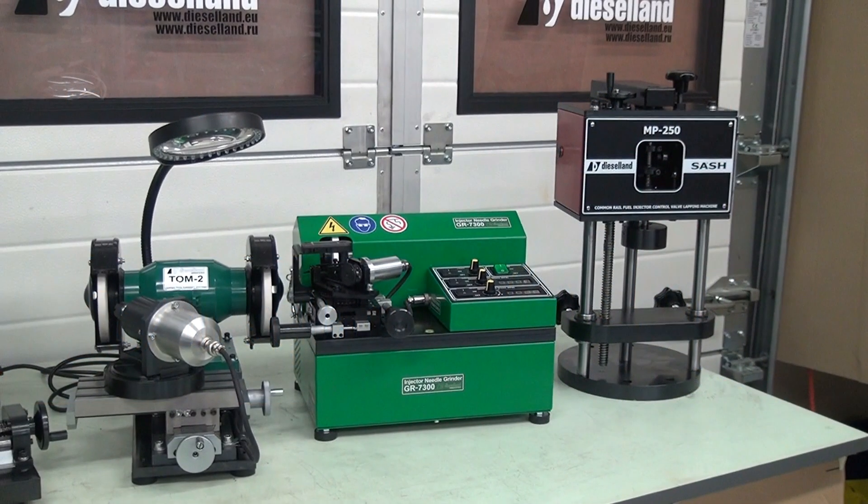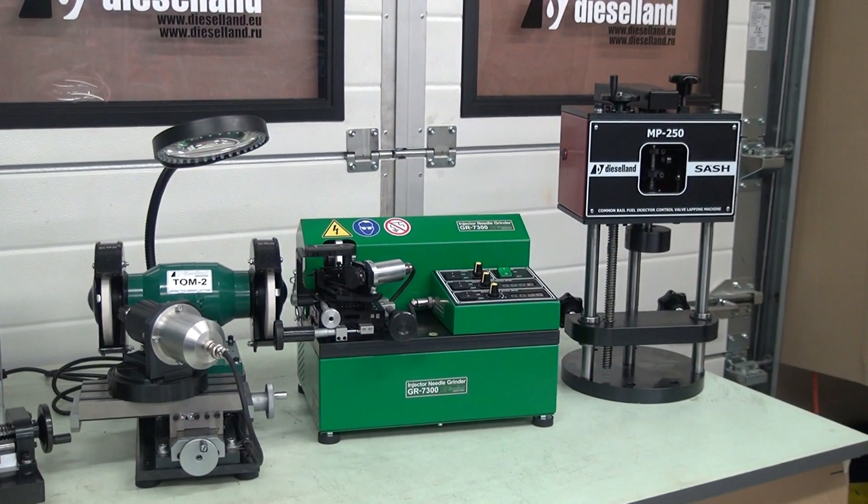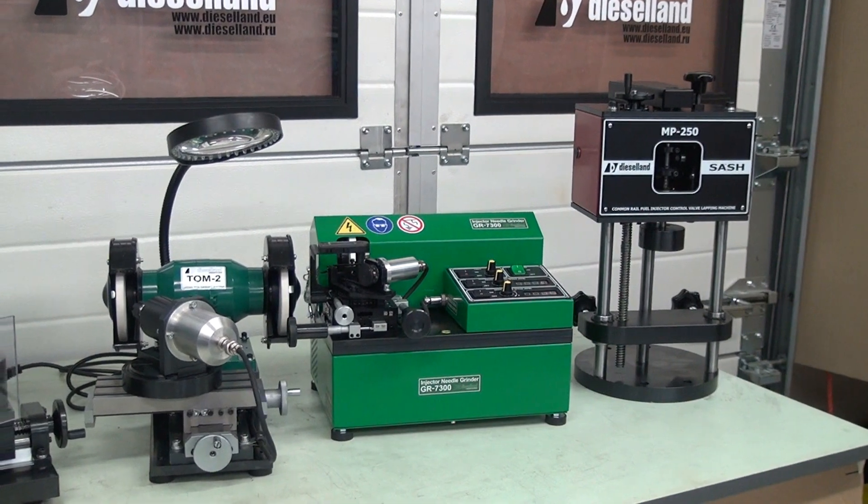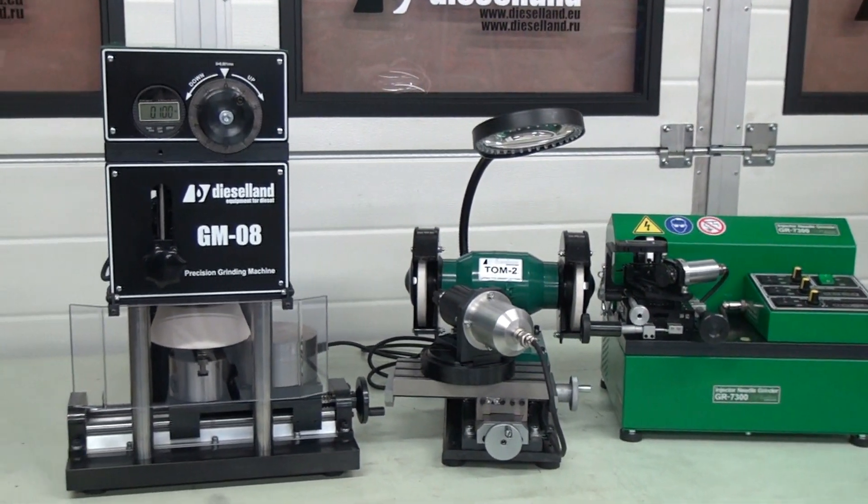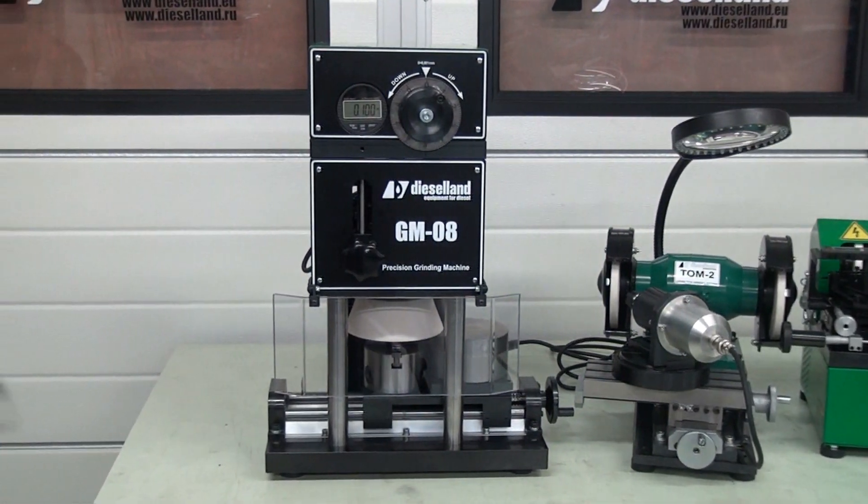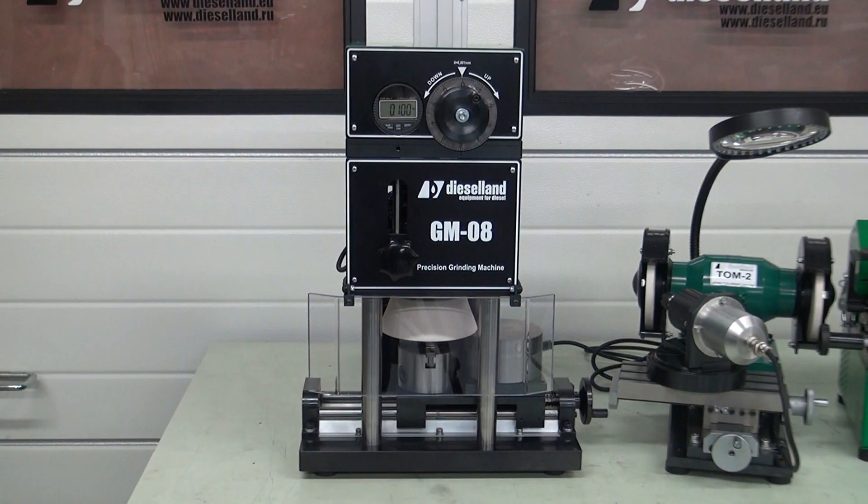In addition to popular machine tools like the Lapper MP250, Grinder TOM2, and the GR series grinders for sharpening of injector needles, the product range of Diesellan now includes a machine for adjustment washer polishing.